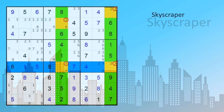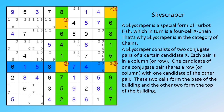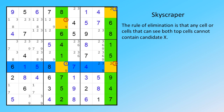Skyscraper. A skyscraper is a special form of turbot fish, which in turn is a four-cell X-chain. That's why skyscraper is in the category of chains. A skyscraper consists of two conjugate pairs of a certain candidate X. Each pair is in a column or row. One candidate of one conjugate pair shares a row or column with one candidate of the other pair. These two cells form the base of the building, and the other two form the top of the building. The rule of elimination is that any cells that can see both top cells cannot contain candidate X.